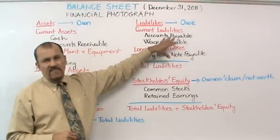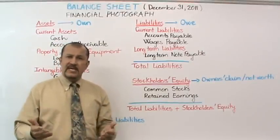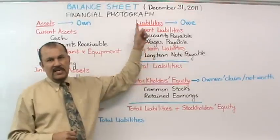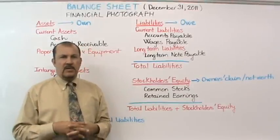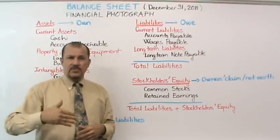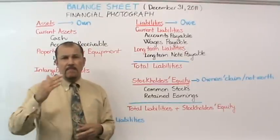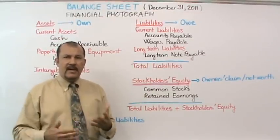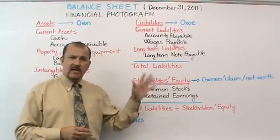Both accounts payable and wages payable fall under the current liabilities section. A current liability is basically a liability that you will pay off within one year. The next subsection under liabilities is long-term liabilities. For example, if you buy a car and sign a promissory note with a bank, those car payments are made over many years. The principal balance you owe past one year is reflected in long-term notes payable, while the portion of the original loan due within one year is classified under current liabilities.